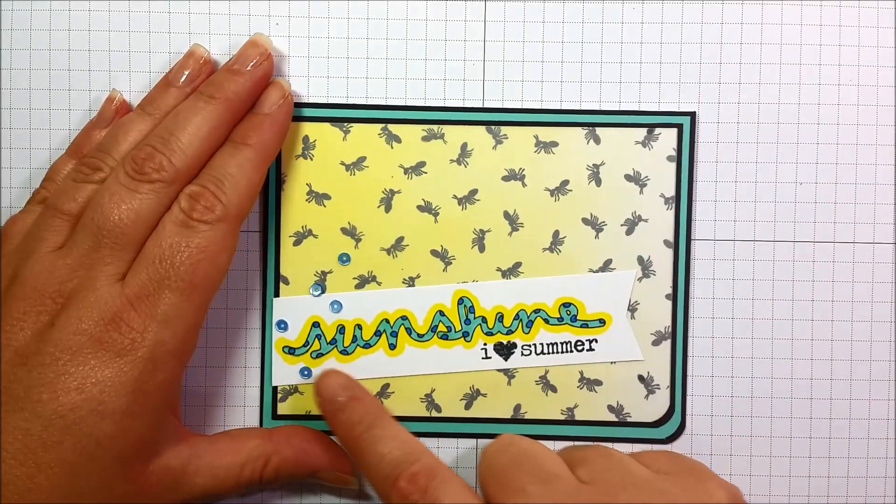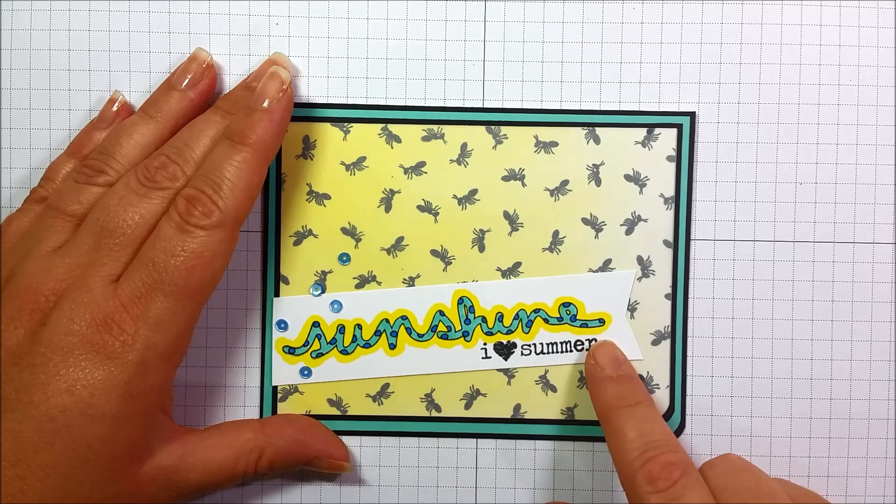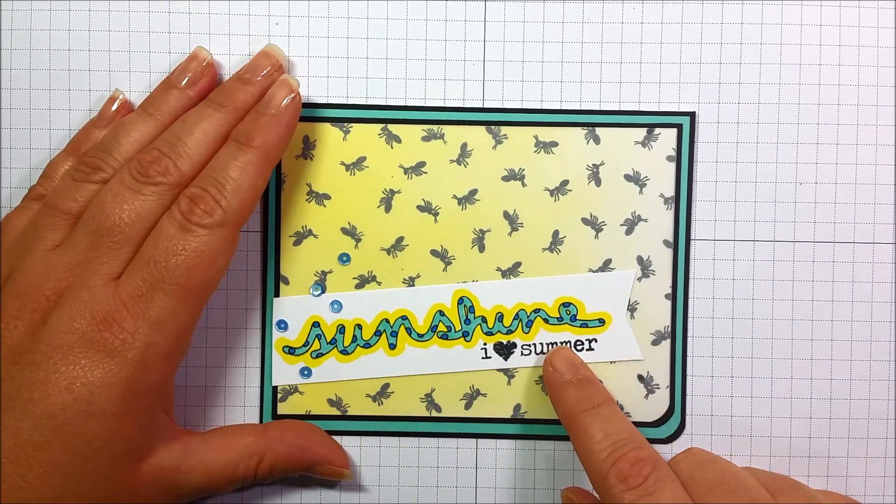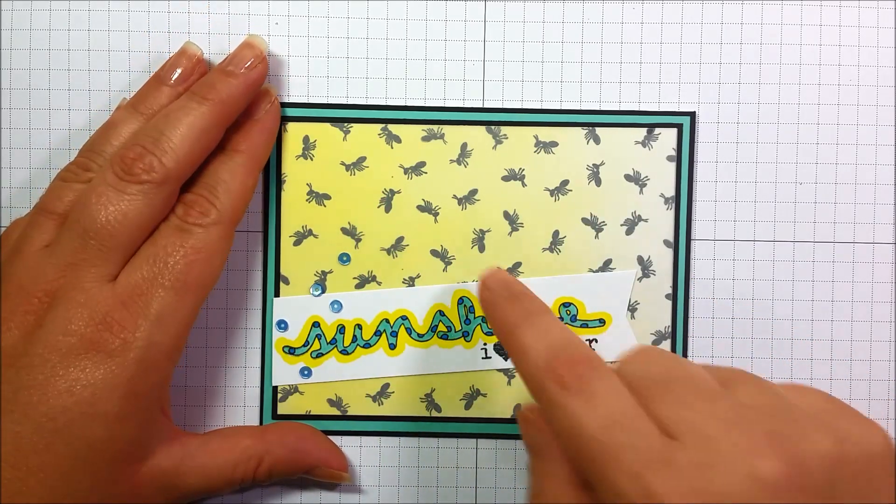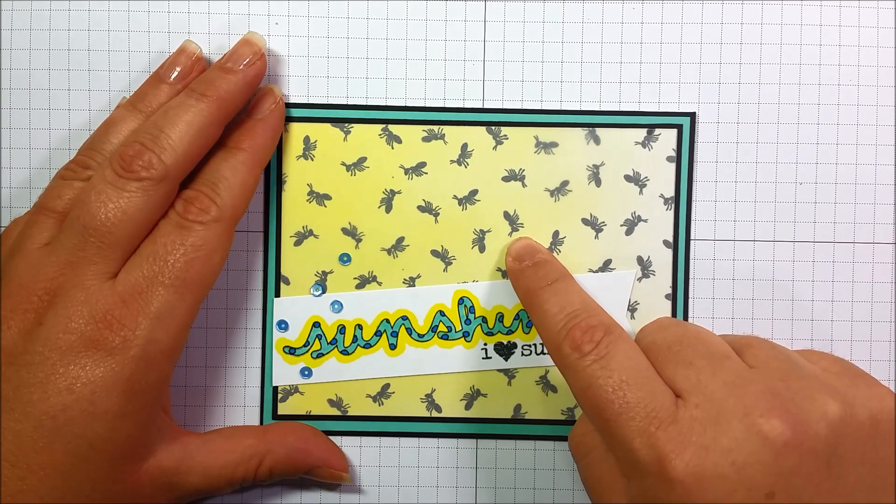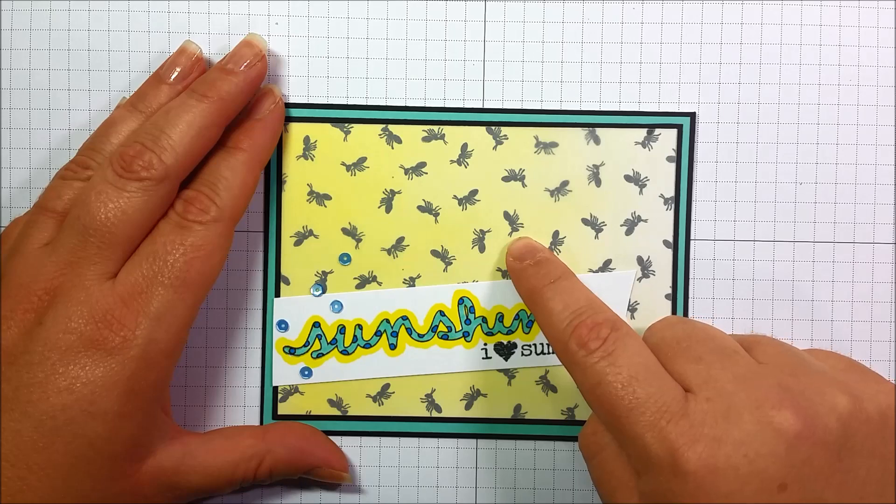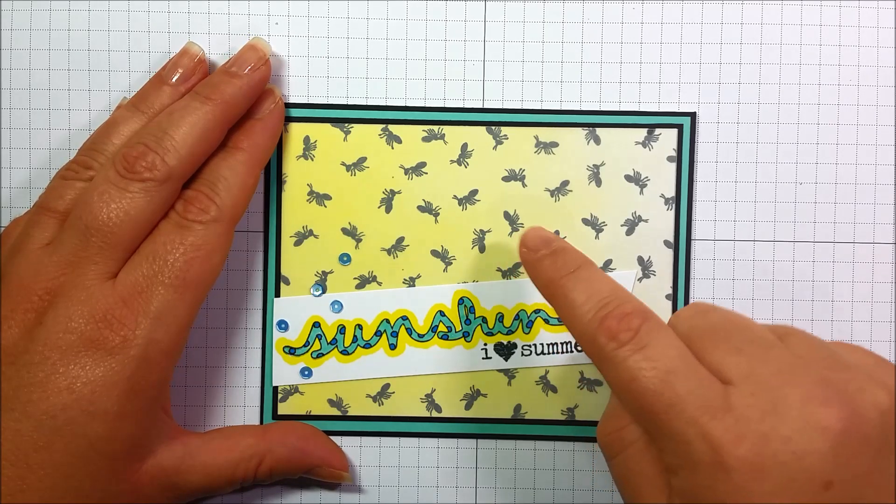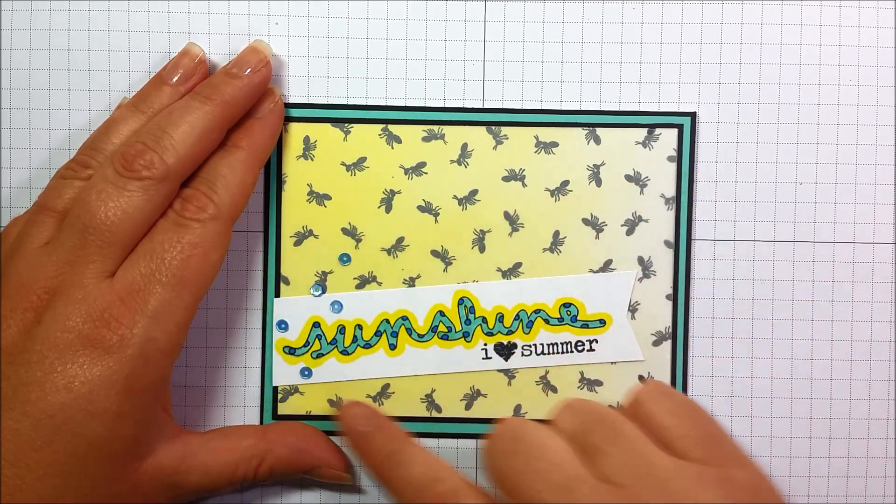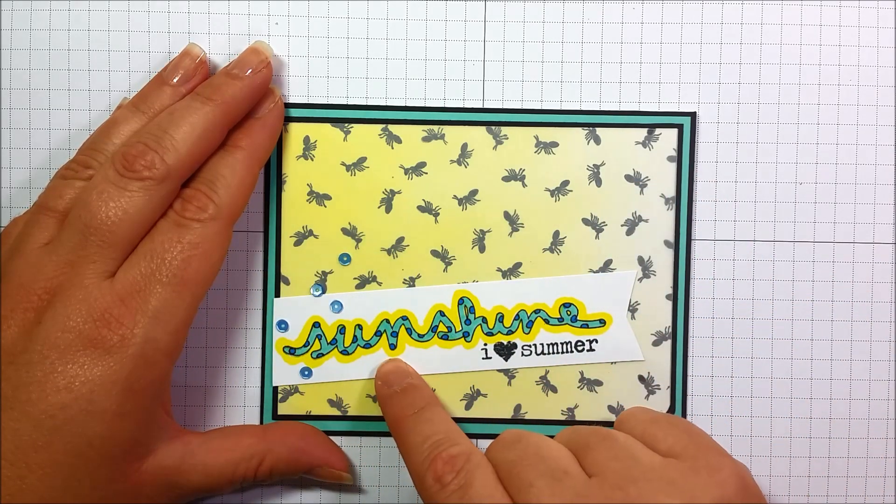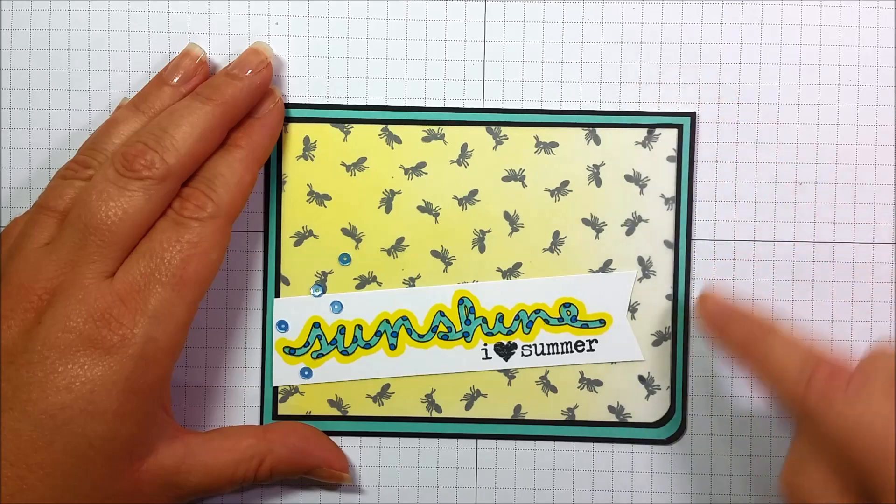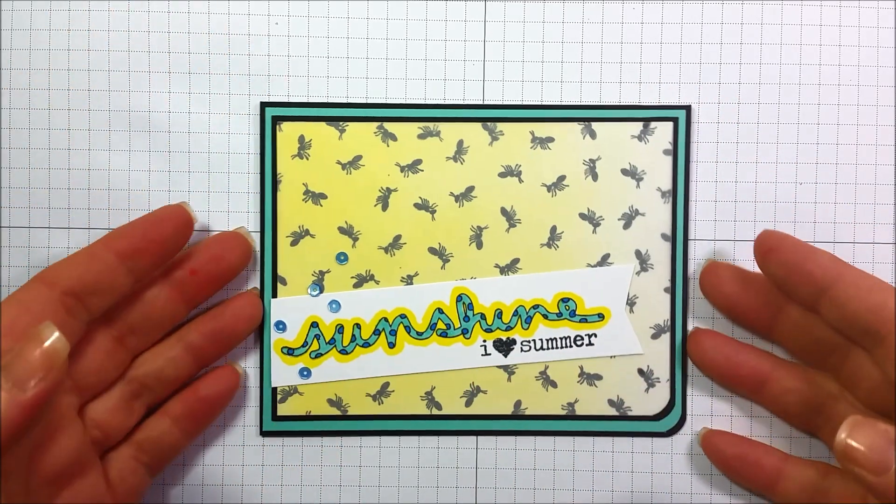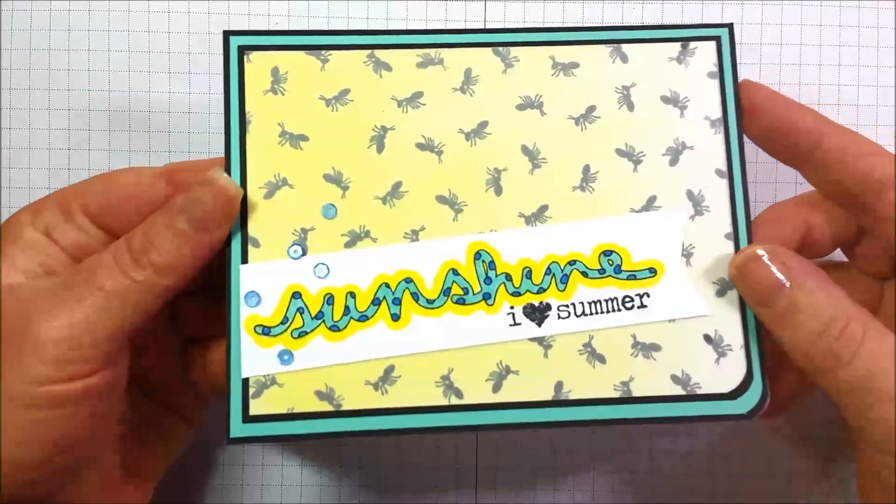On to number two. Remember our sentiments that we stamped - sunshine that we colored and doodled in? Well, I cut it down to a banner size and added it to a cute little piece of paper that I created. In the Scrapbook and Cards Today stamp set there are these cute little ants and I did some stamp surgery and cut one of them off and used it to create my background. Then I added a little bit of gradient coloring with my same color of yellow Copic marker and just made it fade. Then I added the teal in to match and I added another sentiment. This one actually has a little bit of shine to it, but I'm not sure if it shows up on camera.